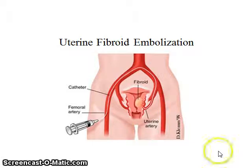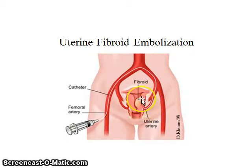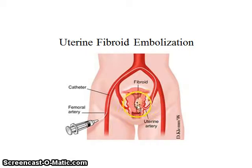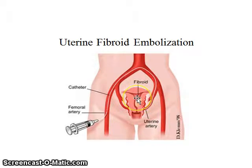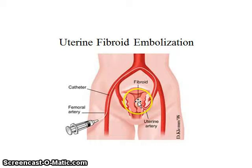Uterine fibroid embolization. Fibroids are a common benign tumor that occur in the uterus. It's fairly common for women to have fibroids in their uterus. These fibroids cause problems — they cause heavy menstruation, pain, and pressure on adjacent structures causing obstruction.